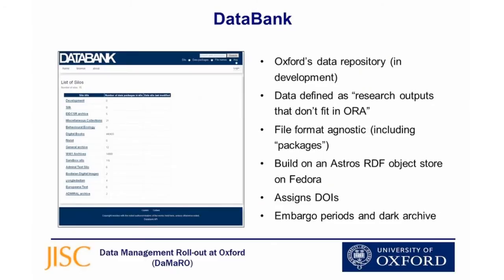DataBank is the university's data repository to be — still being worked on but getting there. We define data as any research outputs that don't fit in Aura — the Oxford Research Archive for papers and articles. So anything that doesn't look like a research article can go in DataBank. It's a very flexible system based on Fedora. People can put their data in, link it to articles in Aura if they wish, and it will all be catalogued with appropriate metadata schema and available for access. It also assigns digital object identifiers to make citations easier, enables embargo periods, and there's also a dark archive for research data that needs to be preserved but shouldn't be made publicly available for ethical or other reasons.